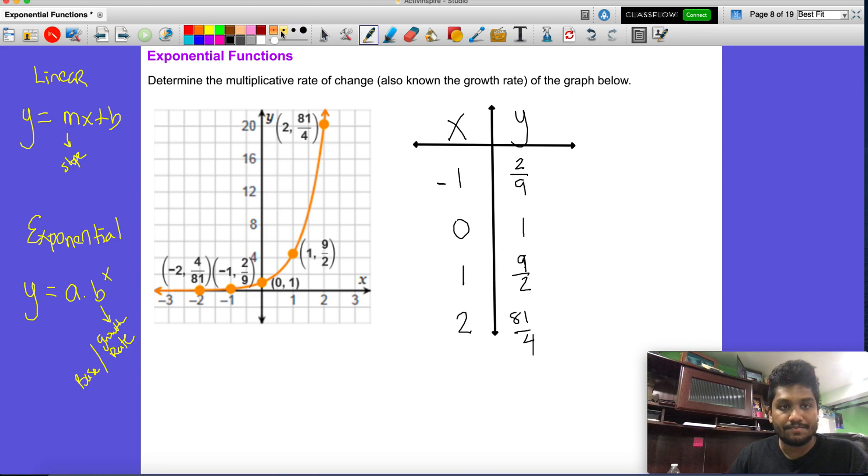All right, so for here we got to think to ourselves now. I like to always start from the easiest thing. One times what will give you nine over two? And that should just be itself, nine over two. Now that doesn't really help us with much. So what we're going to do is we're going to try for both of these.